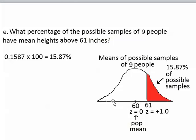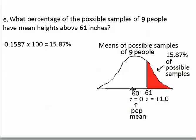The decimal that comes from the z-table always tells you the probability of getting a sample mean below a certain number. If you want to change it to the probability above the number, you have to subtract 1 by the decimal. So the z-table told us that the probability of getting a sample mean below 61 is 0.8413, and we subtracted 1 by that decimal to get 0.1587 — the probability of getting a sample mean above 61.